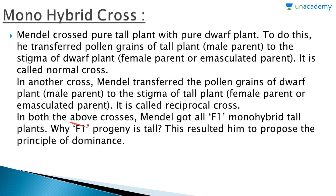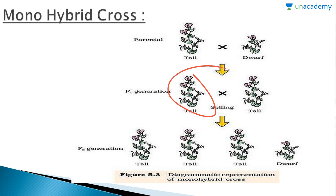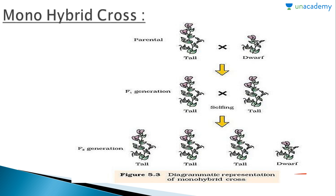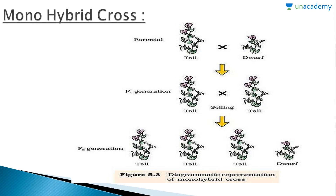In the above crosses, Mendel got all F1 monohybrid tall plants. The fact that all F1 progeny were tall led him to propose the principle of dominance. When the F1 plants were self-crossed, the F2 generation produced three tall plants and one dwarf plant. The phenotypic ratio in F2 was 3:1, and the genotypic ratio was 1:2:1.